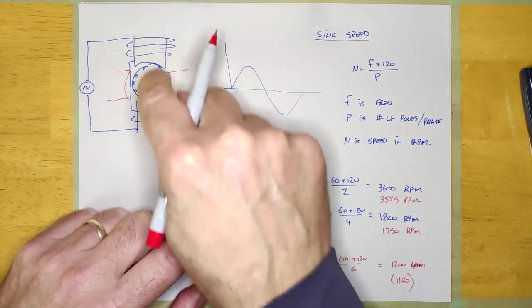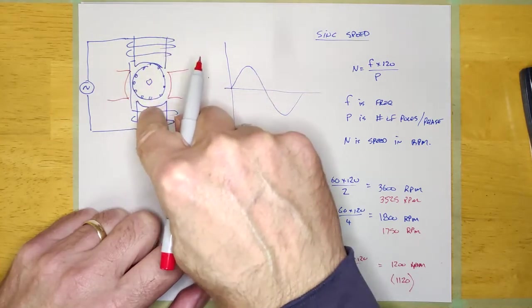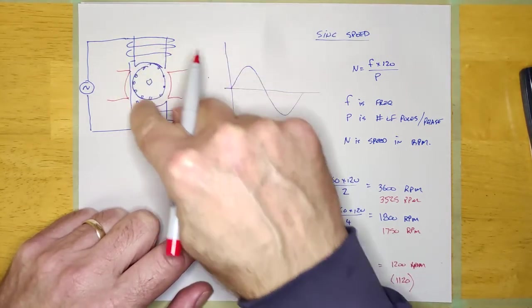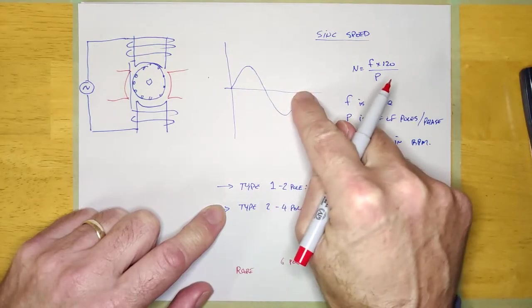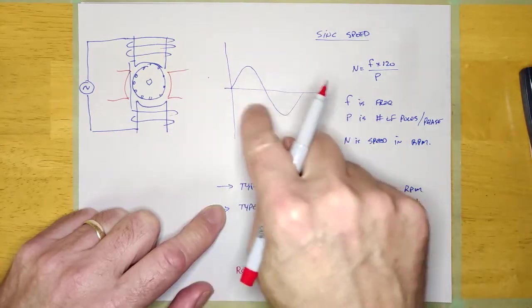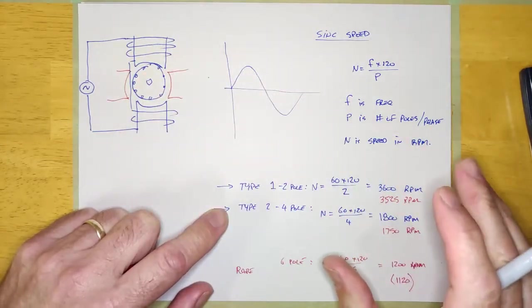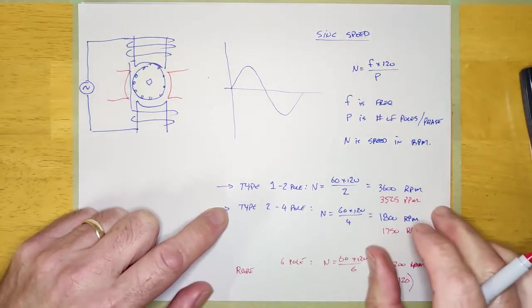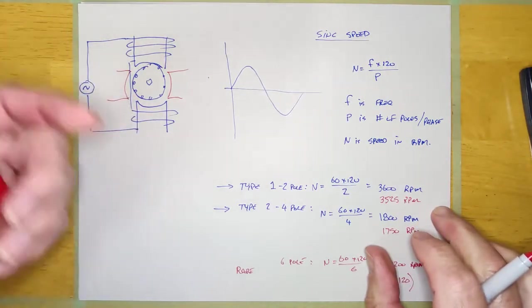The reason it runs at half the speed is because instead of doing 180 degrees in one alternation, it's going to actually do only 90 degrees. So it's going to take twice the frequency to produce the same sync speed, or at the same frequency it's going to run at half the sync speed.